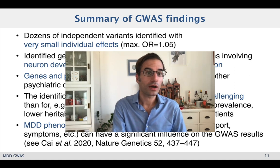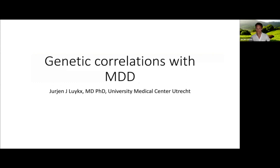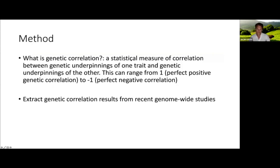Now Jürgen Luix will tell you more about genetic correlations. We will discuss the genetic correlations that have been found for MDD over the past decade or so. First, a brief introduction to what genetic correlation is: it is a statistical measure of correlation between the genetic underpinnings of one trait and the genetic underpinnings of another, and it can range from one — being a perfect positive genetic correlation — to minus one, which is a perfect negative. I extracted genetic correlation results from recent genome-wide association studies, focusing on the largest GWAS for MDD, but also other studies that specifically examined other kinds of phenotypes.